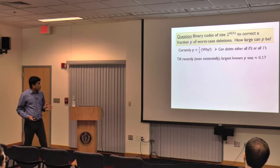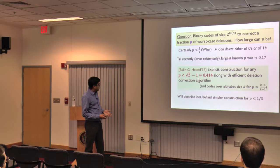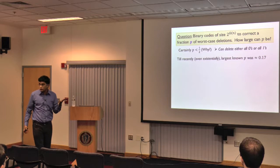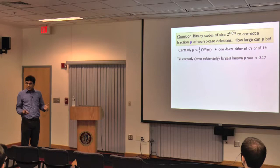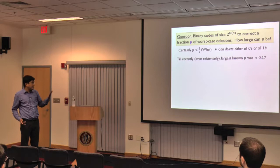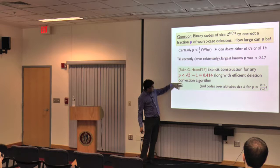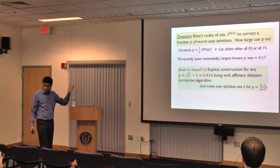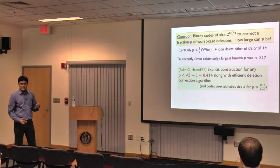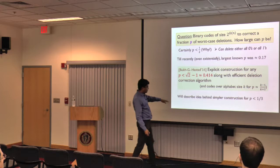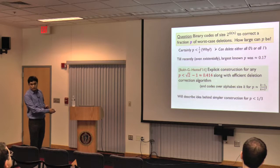We don't know if we can actually achieve deletion fraction p approaching one-half with positive rate. Previously the best known non-constructive result said you can correct 17% deletions. In recent work we improved this to a deletion fraction approaching 41.4%, and we actually give these codes explicitly and construct them efficiently — so you can handle up to these many deletions with a good code.